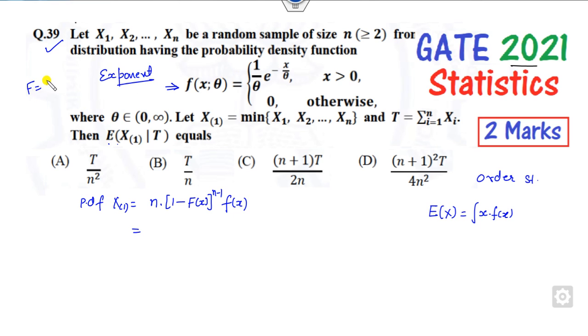you substitute here, the value is (1 - e^(-x/θ))^(n-1). If you substitute the value of the PDF, which is (1/θ)e^(-x/θ),